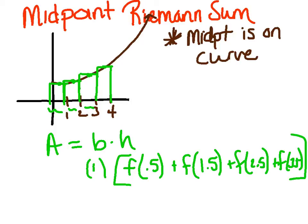We're picking that midpoint on the curve. Plugging and chugging, I believe we get an area of 25. So there's our left, right, and midpoint Riemann sum. Let me remind you of the pattern: when we did a left-hand Riemann sum, we started with the lower bound and did not use the upper bound. When we did a right-hand Riemann sum, we skipped the lower bound and ended on the upper bound.